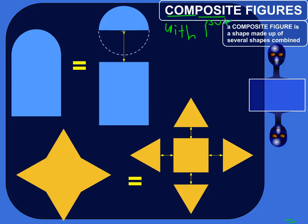And then you can take those shapes and combine them to make more complex shapes, these composite figures. So composite figures are shapes made up of several other shapes combined.